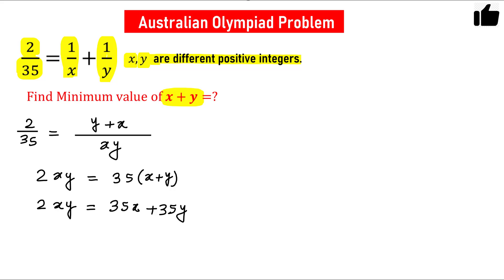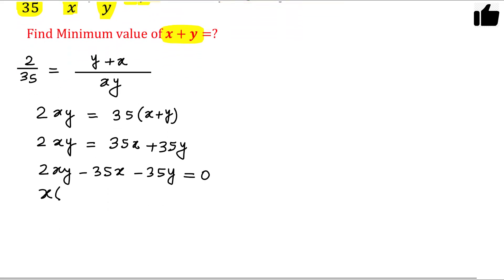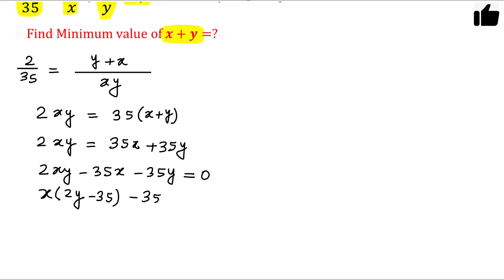Now if I take everything to the left-hand side, I will have 2xy minus 35x minus 35y equals 0. I can take x common from the first two terms, giving x times (2y minus 35) minus 35y equals 0.